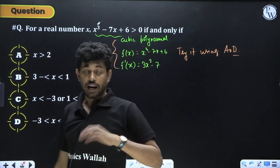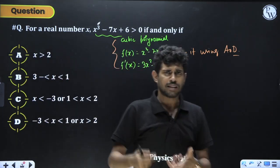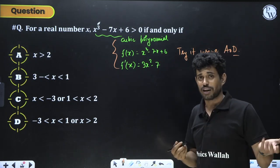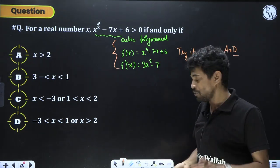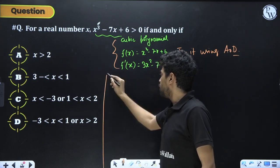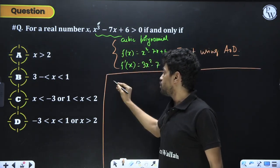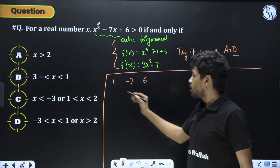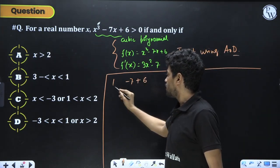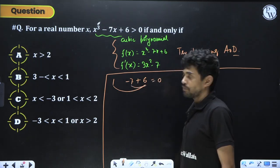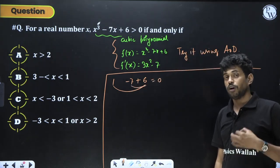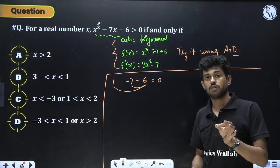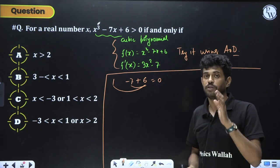I will not go through the calculus approach. Instead, I will use a class 7-8 level concept. Think about it: this polynomial has coefficients 1, -7, and 6. The trick is that if you add all the coefficients, the result is 0. You know that if a polynomial has the sum of all coefficients equal to 0, then x = 1 must be a root.